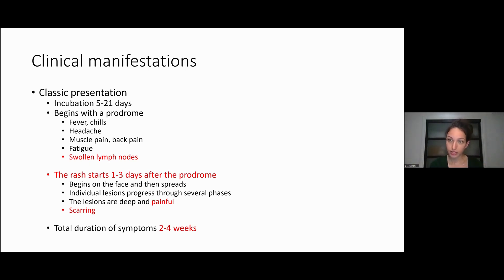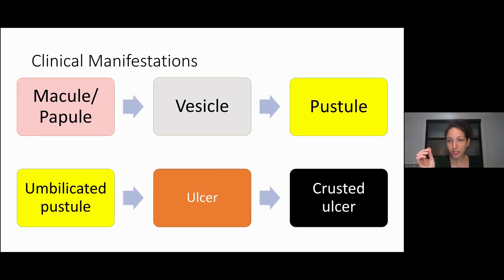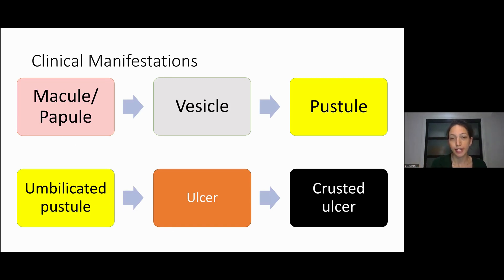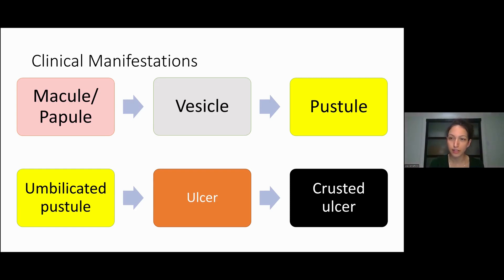The individual lesions progress through several phases. The lesions are deep and painful, and they leave scars. Total duration of symptoms is two to four weeks, quite long compared to other viruses. The individual lesions start off as macules and papules — basically a flat pink spot or a little pink bump — then progress to a vesicle filled with clear fluid, and then to a pustule filled with white or yellowish fluid, which umbilicates, meaning the center collapses in, becomes an ulcer, and then a crusted ulcer, classically with a black necrotic crust.